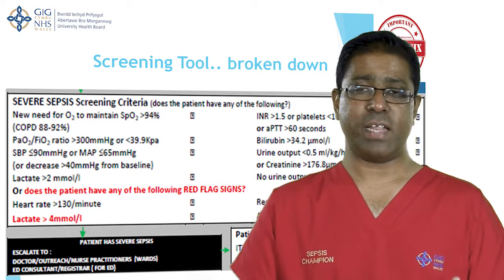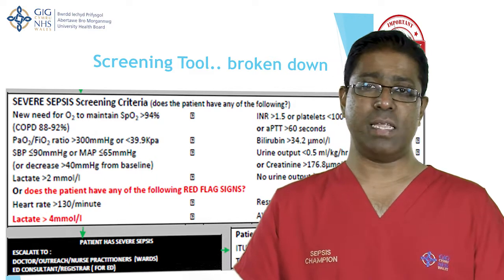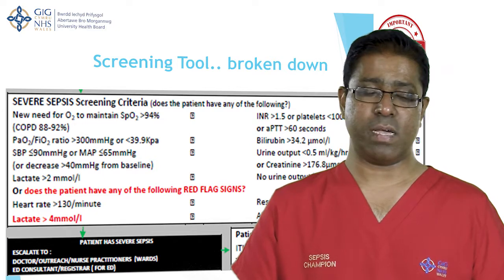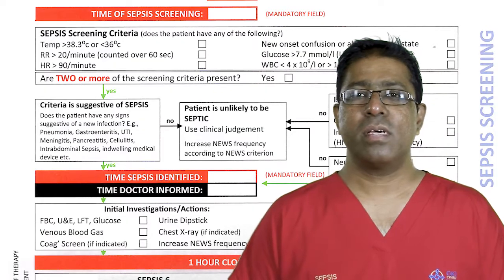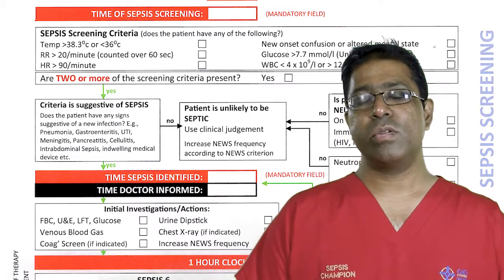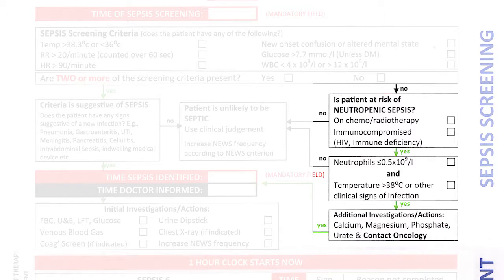If one or two red flag signs are ticked, staff need to escalate to senior nursing staff or senior doctors. On the right side of the screening tool there is a section for neutropenic sepsis. If a patient has a NEWS of three but only ticks one SIRS box instead of two, look at the right side of the form. If the patient has a history of cancer with radio- or chemotherapy, follow that pathway to ensure early antibiotics are given according to trust guidelines.